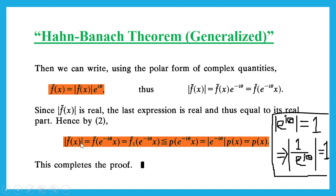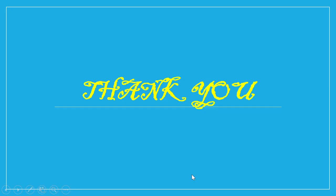This completes the proof — our main target, that |f̃(x)| ≤ p(x), i.e., f̃ is bounded by the sublinear functional p defined on the vector space X. This completes the proof of the generalized Hahn-Banach theorem. So this is the end of the lecture. Thank you for watching the video.